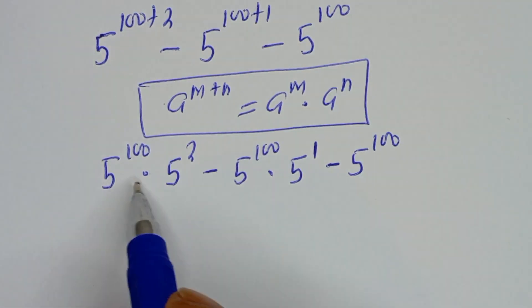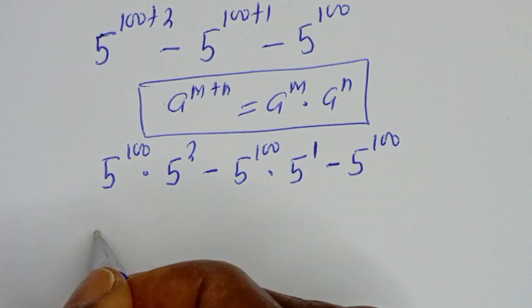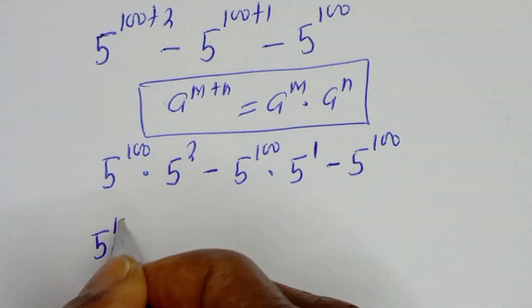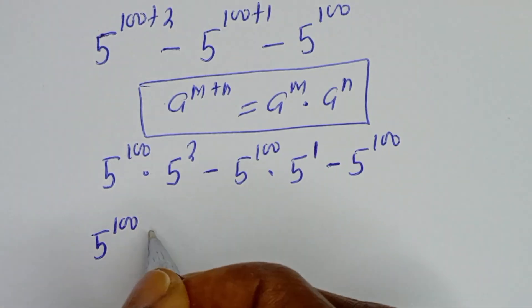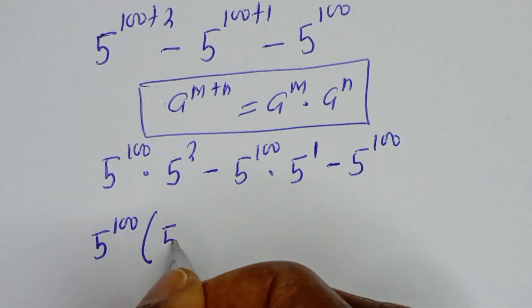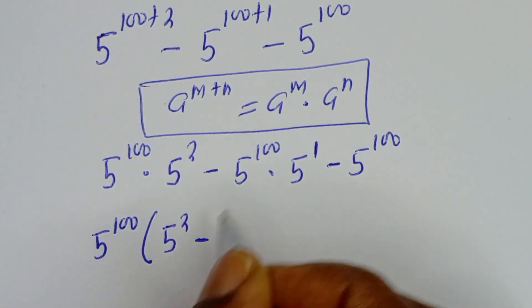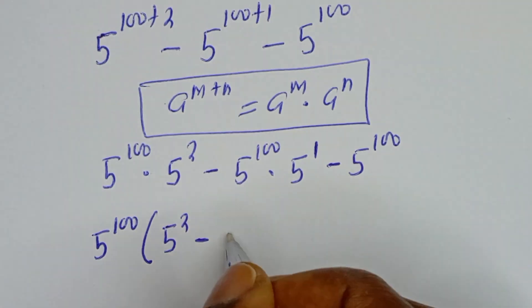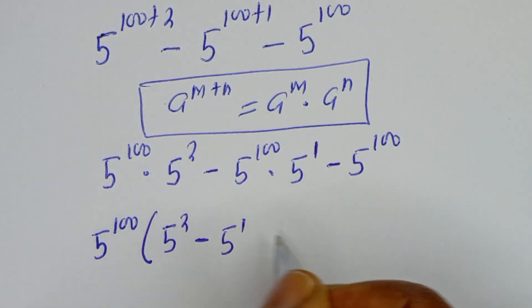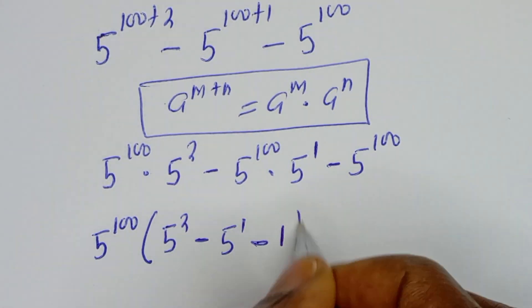Then, from here, 5 to the power of 100 is common — let's bring it out. 5 to the power of 100 times bracket: dividing each term gives 5 squared minus 5 to the power of 1 minus 1.